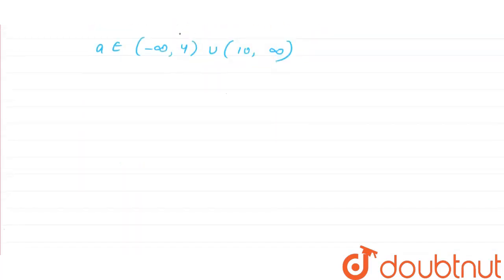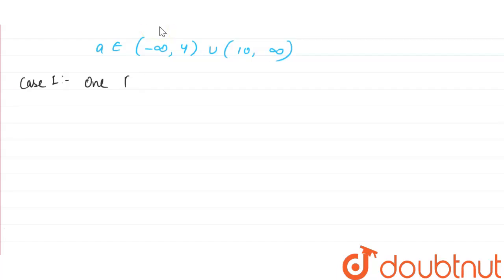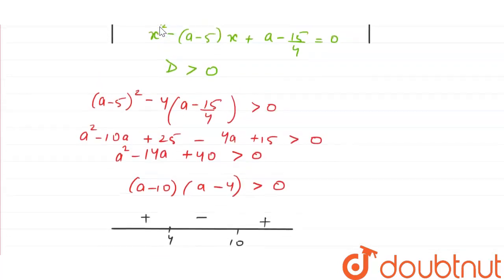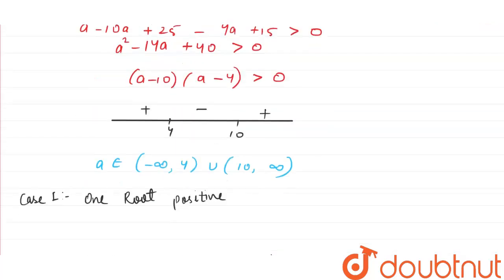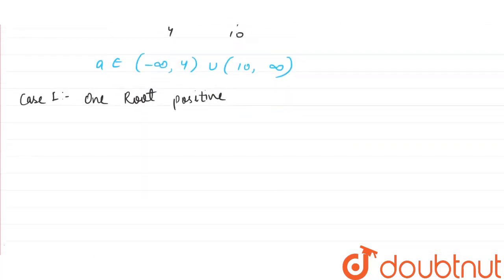Case 1: exactly one root positive. For this, the graph has one root positive and the next one negative. If one root is negative and one root is positive, then the product of roots will be negative. Therefore, for this quadratic equation, the product of roots equals A minus 15/4, which must be less than 0.